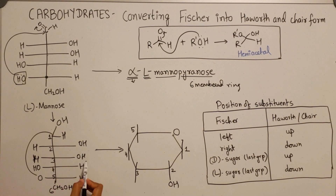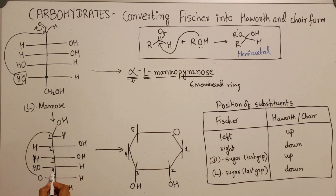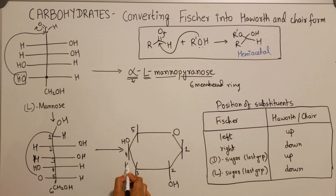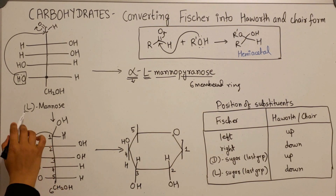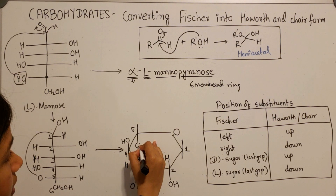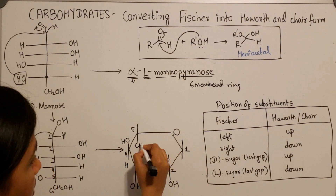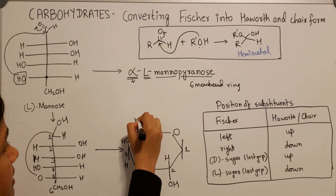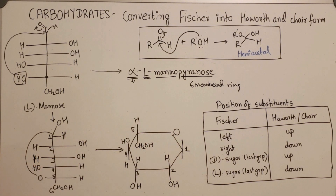On carbon three, the hydroxy group is again on the right-hand side, so it goes down. On carbon four, the hydroxy group is on the left-hand side, so it goes up. Since it is an L sugar, the CH2OH last group goes down, and H is on top.